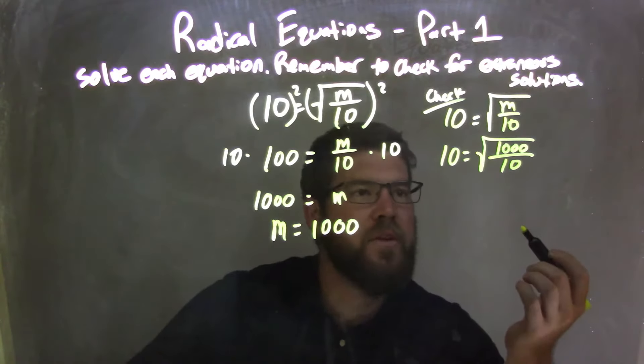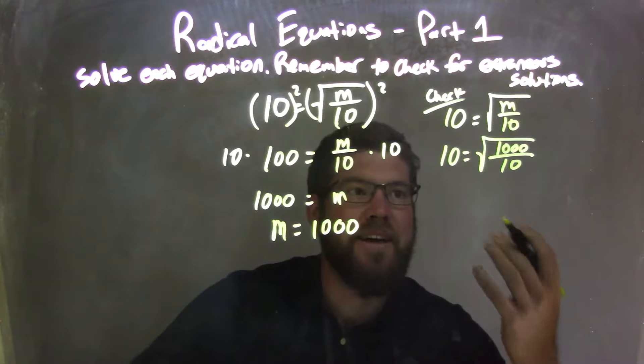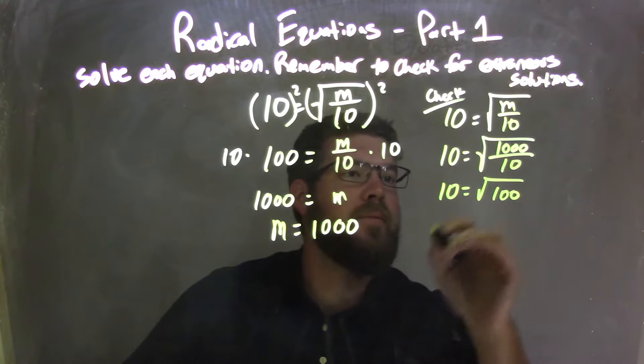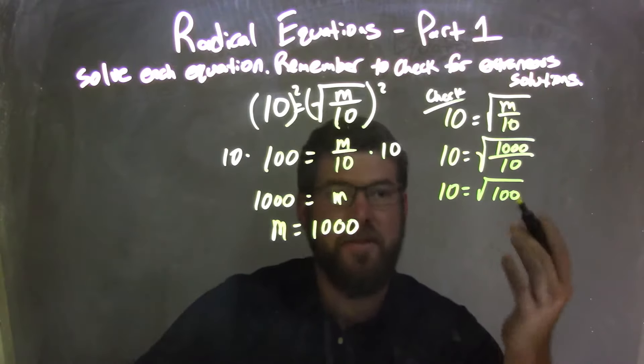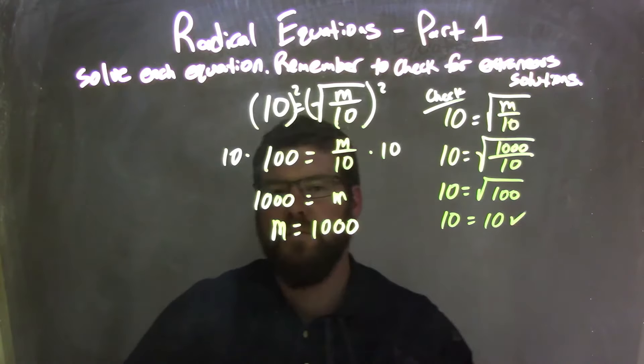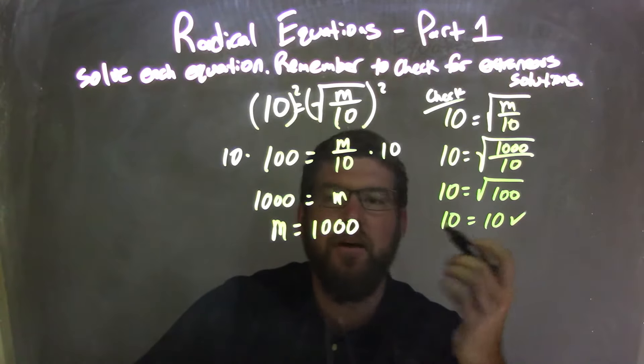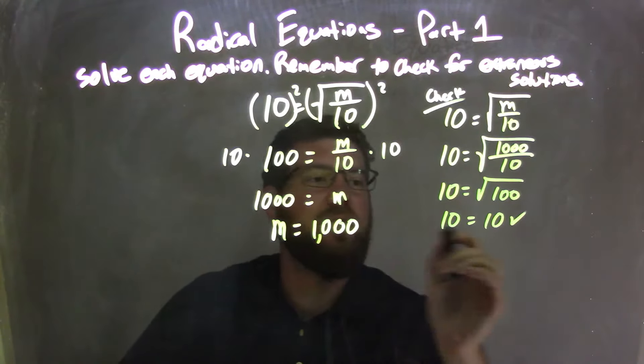1,000 divided by 10 is 100. So I have 10 equals the square root of 100. And the square root of 100 is 10. And there we go. We checked the solution was right, so we don't have an extraneous solution. So our final answer is m equals 1,000.